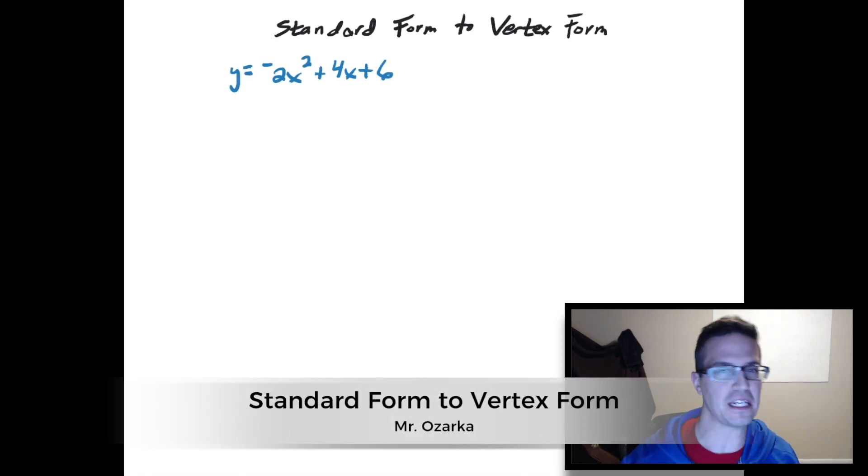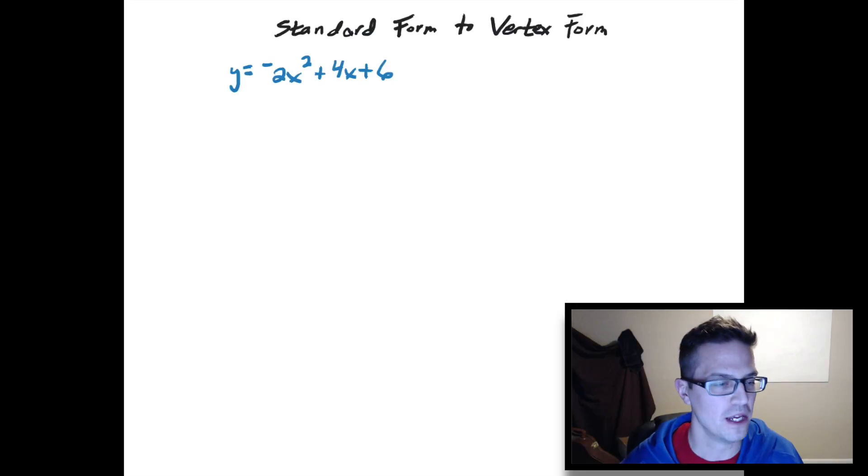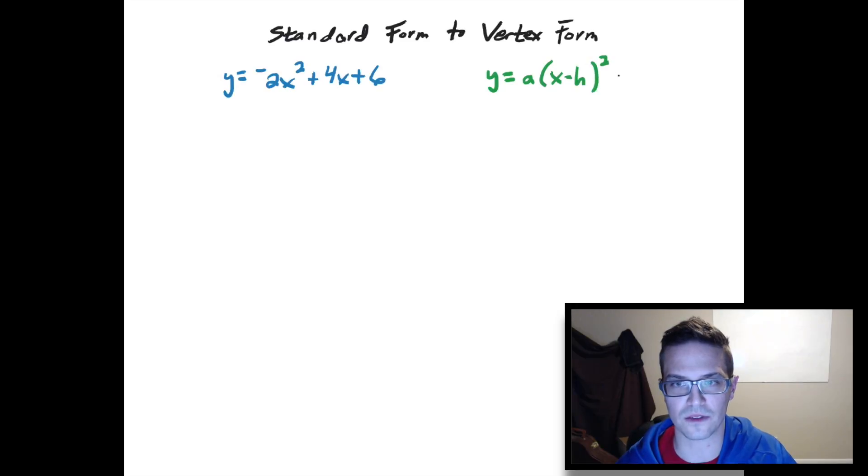This is going to be a video about converting an equation from standard form of a quadratic to vertex form. To do this, first I'm going to start with what vertex form even looks like. I'm going to write this off to the side right here. So it should look like a times the quantity of x minus h quantity squared plus k.